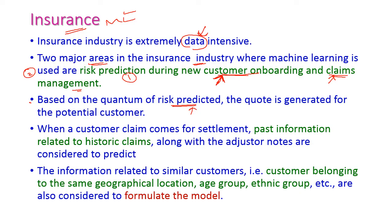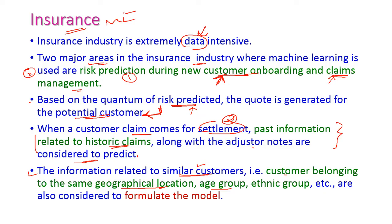Based on the quantum risk predictor, a quote is generated for potential customers, and only validated customers are added to the insurance industry. When a customer claim comes for settlement, past information related to historic claims along with adjuster notes are considered. Information related to similar customers — those belonging to the same geographical location, same age group, and ethnic group — is collected to formulate the model.